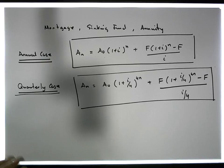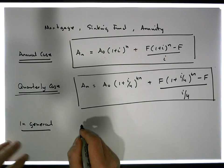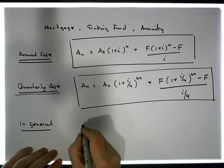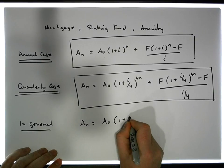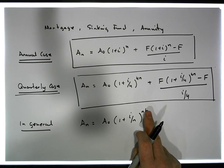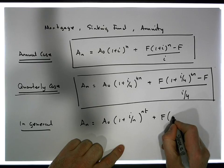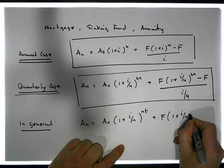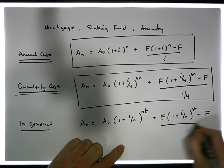And I suppose in general, in general, our formula, not continuous compounding, our formula would look like A n is equal to A zero times one plus i over n raised to the power of nt. This time t represents years, n represents the number of compounding periods. Plus F times one plus i over n raised to the power of nt minus F all over i over n.